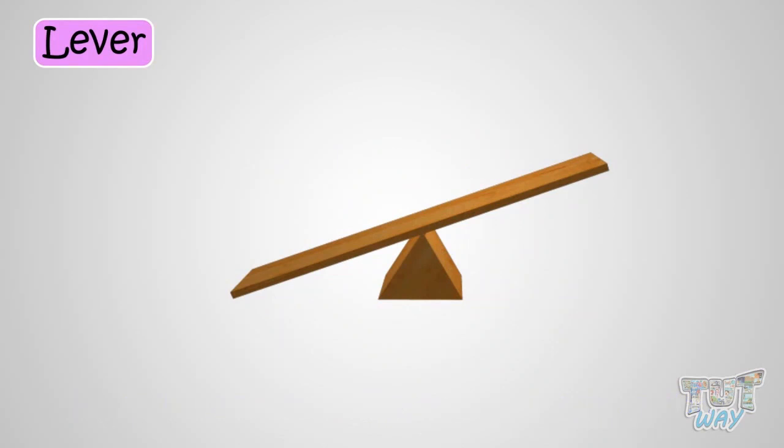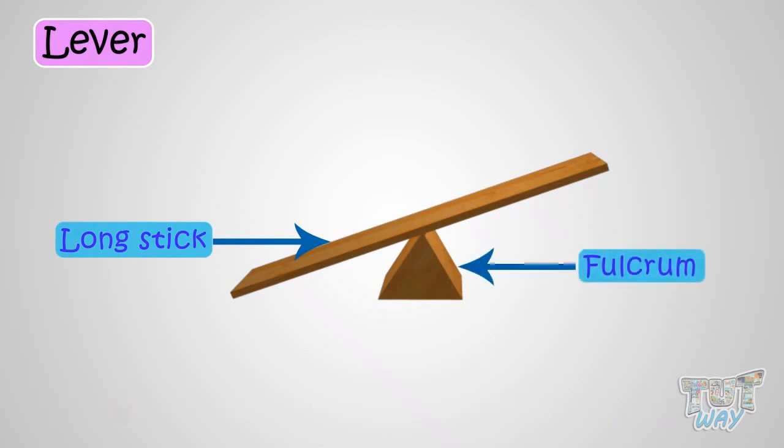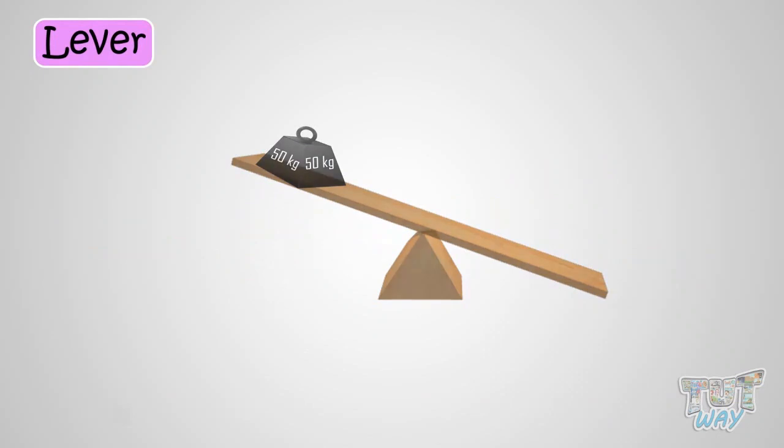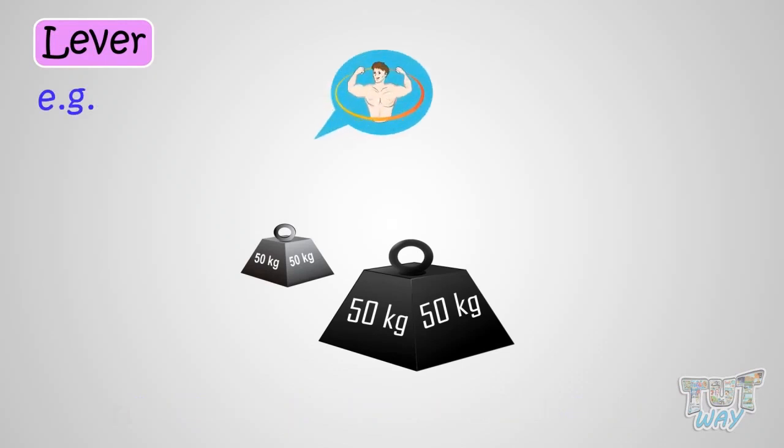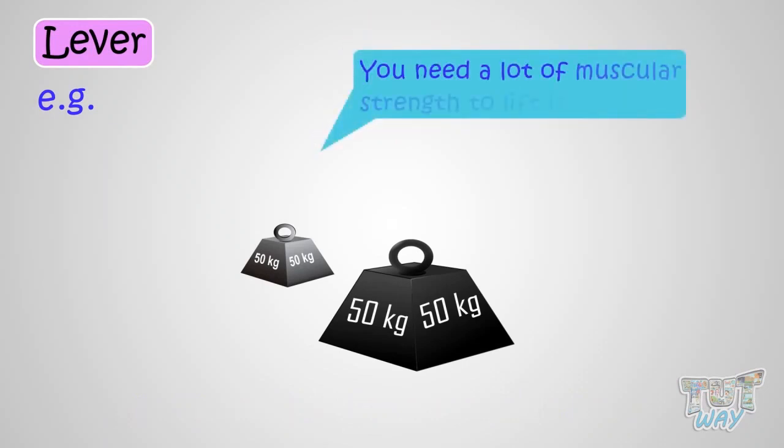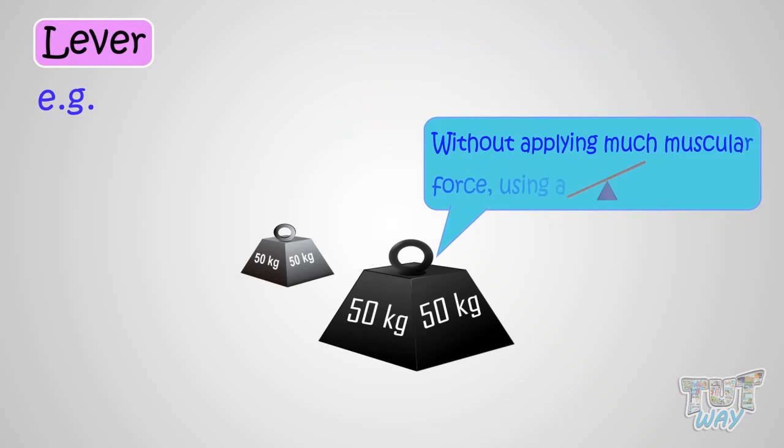A lever is basically a long stick that you push or pull against a fulcrum to move something. In order to lift an object by hand requires force. For example, to lift this heavy weight by hand or using your muscular force, you require a lot of muscular strength. But we can lift this object without applying much muscular force using a lever.